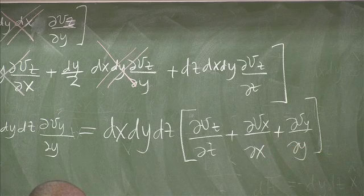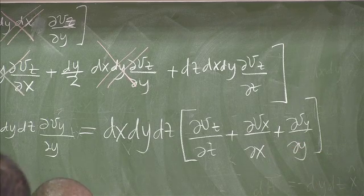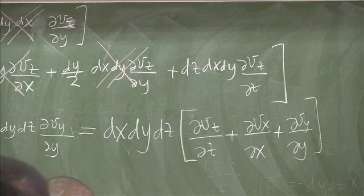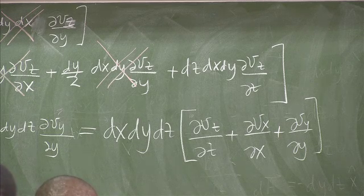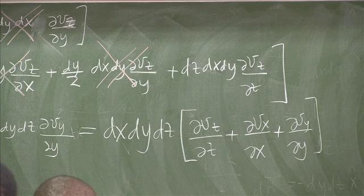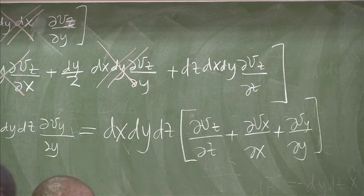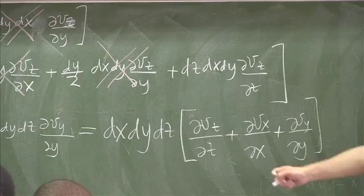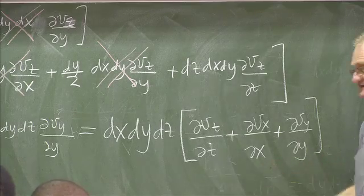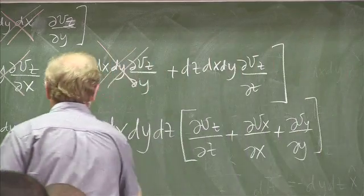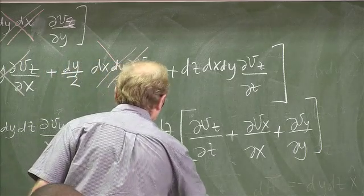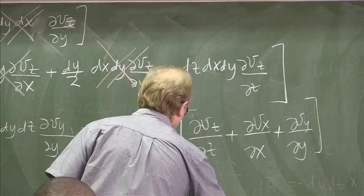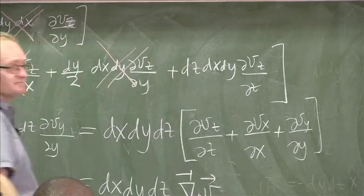What is that thing in square brackets? Divergence. Divergence. Absolutely. This is the divergence of v. So this is dx, dy, dz times the divergence of v. Good.